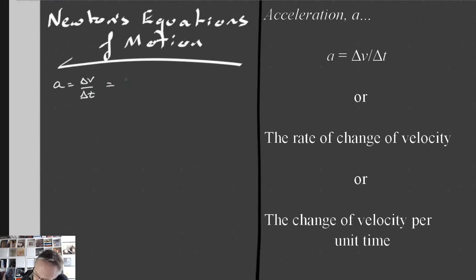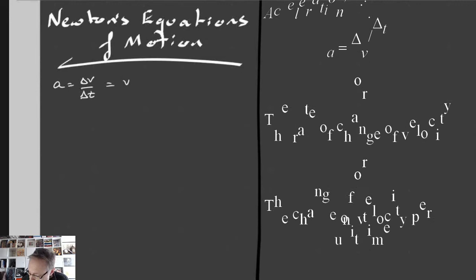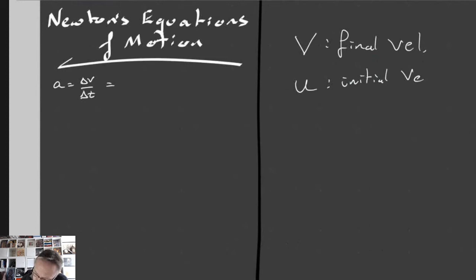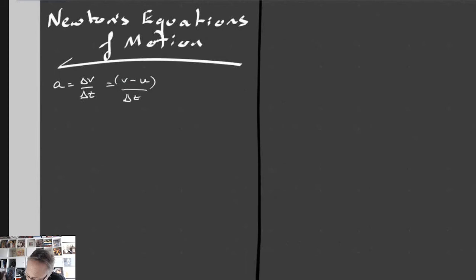We start with the definition of acceleration: a = Δv / Δt, which is the change in velocity. We often write that as final minus initial. I'm using subscripts to represent the final and initial values of velocity. In mechanics, we use v for the final velocity and u for the initial velocity, so we get a = (v − u) / t.